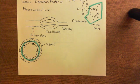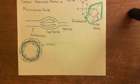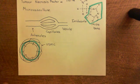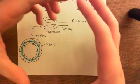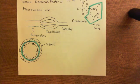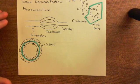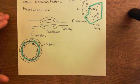Alternatively, if the vascular smooth muscle cells relax, you'll get vasodilation. The ring of smooth muscle cells will get a greater diameter, increasing the diameter of the lumen of the blood vessel. That's the structure of an arteriole.